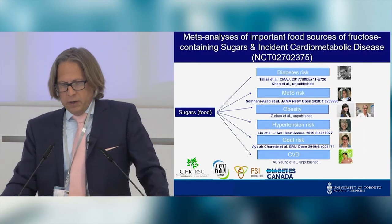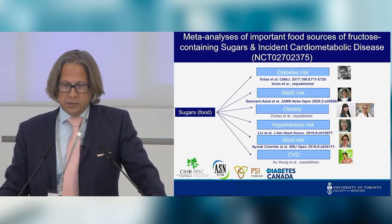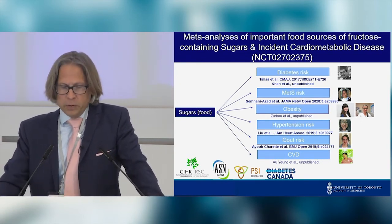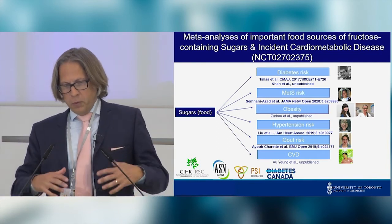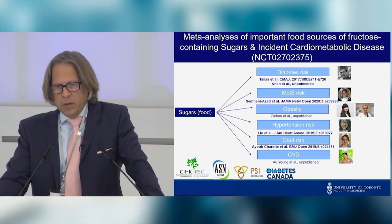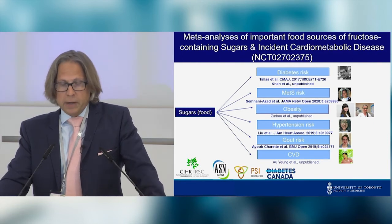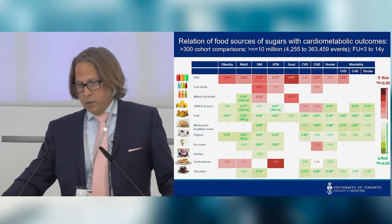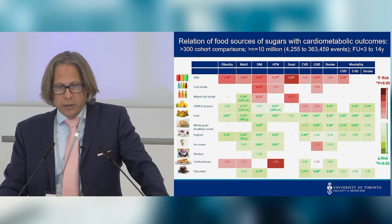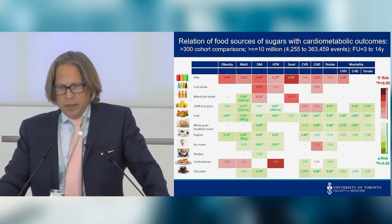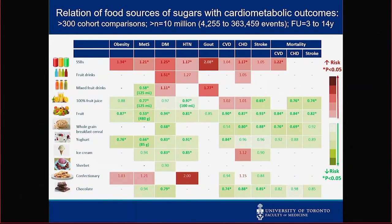The negative nutrient — and one we can't avoid in packaged and processed foods — is sugars. The food matrix matters, and energy matters; that's the real takeaway. Looking at a heat map of published literature from obesity through to mortality outcomes for CVD, CHD, and stroke, it's really a story of sugar-sweetened beverages showing the increased risk signals. Foods like fruit, whole grain breakfast cereals, and yogurt show protective signals. The dose matters — the dose obtainable from fruit — and even ice cream and chocolate show neutral or modest associations.